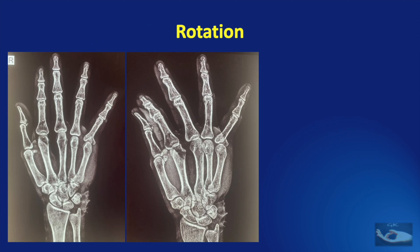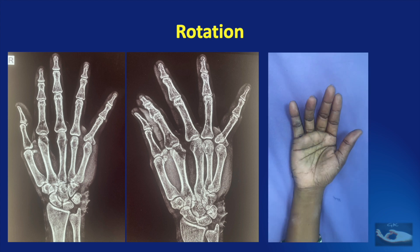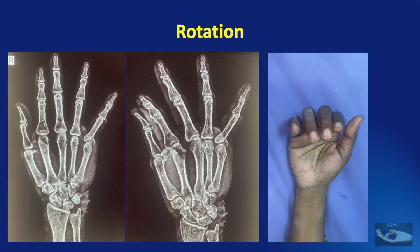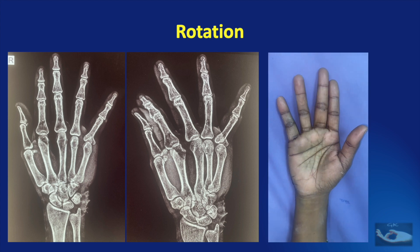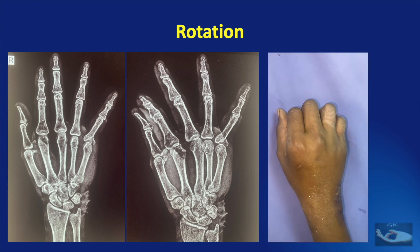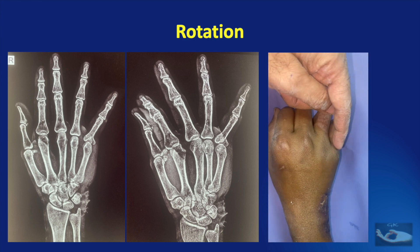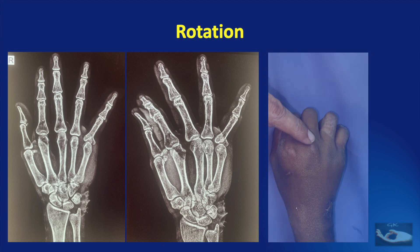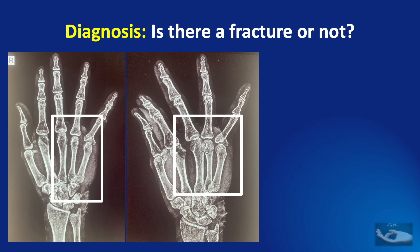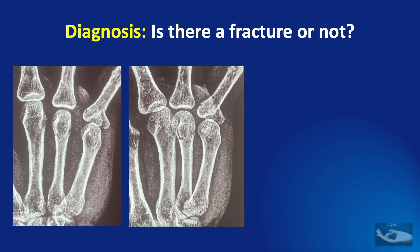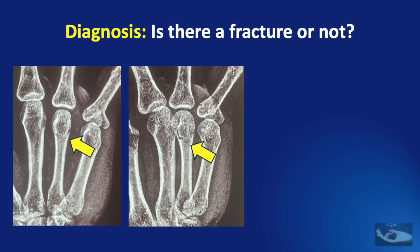In this X-ray, we can make out a fracture of the base of proximal phalanx of the little finger. But if you look at the clinical finding, you will note a rotation on the ring finger and a loss of the knuckle prominence on the ring finger. If we go back to the X-ray and see it, we will note a fracture of the neck of the fourth metacarpal also.